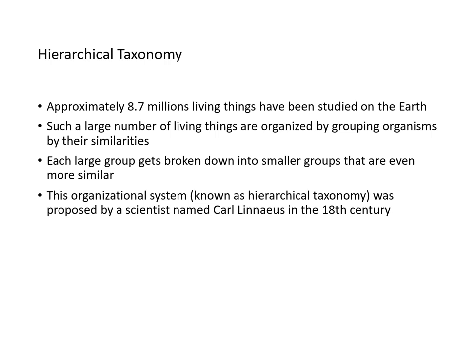Because there are approximately 8.7 million living species that have been studied on Earth, we need a systematic way of naming and grouping them. That's where hierarchical taxonomy becomes useful. Originally designed by scientist Carl Linnaeus in the 18th century, he grouped organisms by their similarities, and each large group is broken down into smaller subgroups that are even more similar to each other.